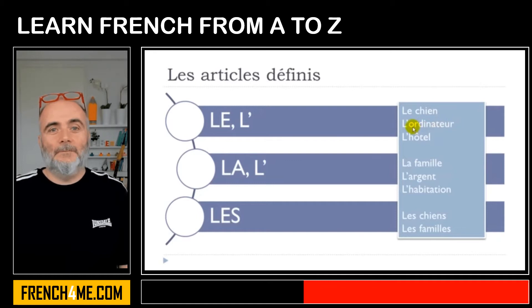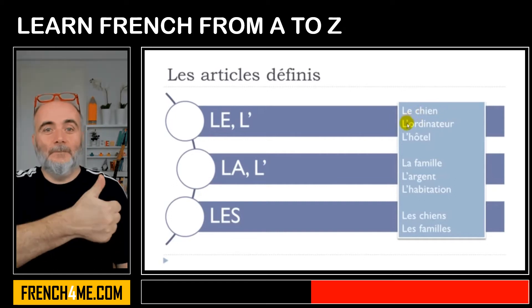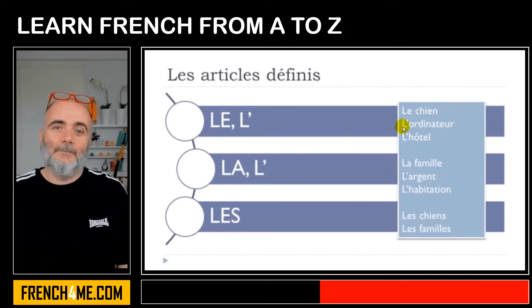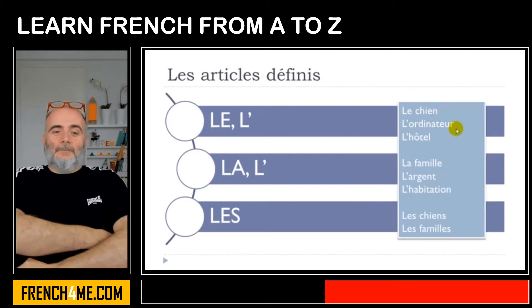Second case: 'ordinateur'. You can see that it starts with the vowel O. As I said, E and O don't get along that well, so you take this E away and then you get 'l'ordinateur'.